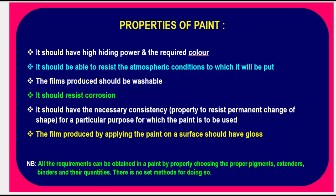Properties of paint: Paint should have high hiding power and the required color. It should resist atmospheric conditions. The films produced should be washable. Paint should resist corrosion and have the necessary consistency for its intended purpose. Films produced should have gloss. All these properties can be obtained by properly choosing pigments, extenders, binders, and their quantities.